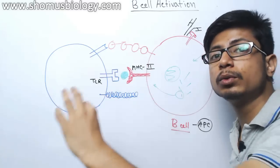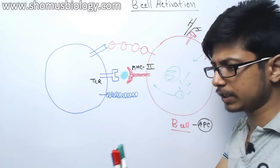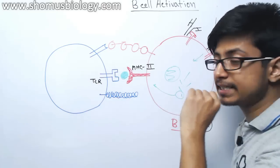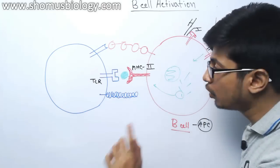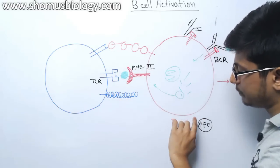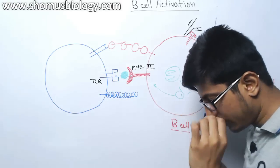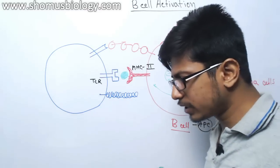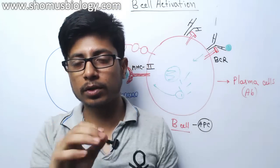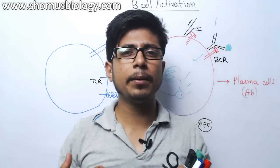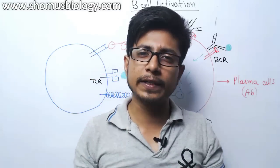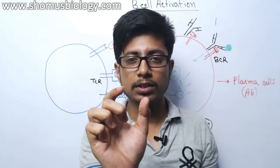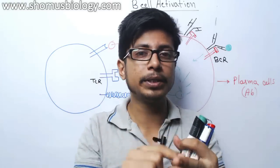The MHC class 2 loaded with the pathogen fragment showcases it to the T helper cell — specifically T helper 2 cell. There are two types: T helper 1 and T helper 2. This interaction between B cell and T helper cell is very important for B cell activation. In our body, there is a variety of T cells and B cells present who can find and bind specific antigens.